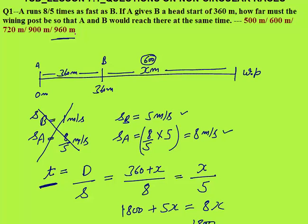An important note: we took speeds as 5 and 8, but you can take 10 and 16, or 50 and 80 — the answer will be the same. The only requirement is that the speeds must be in the ratio 8:5.